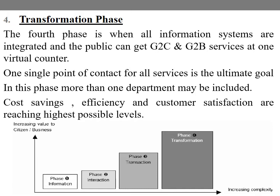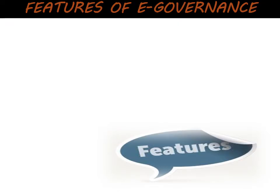The final phase is the transformation phase. In this phase, all services will be available at one single point. These are the four main phases or stages of e-governance.